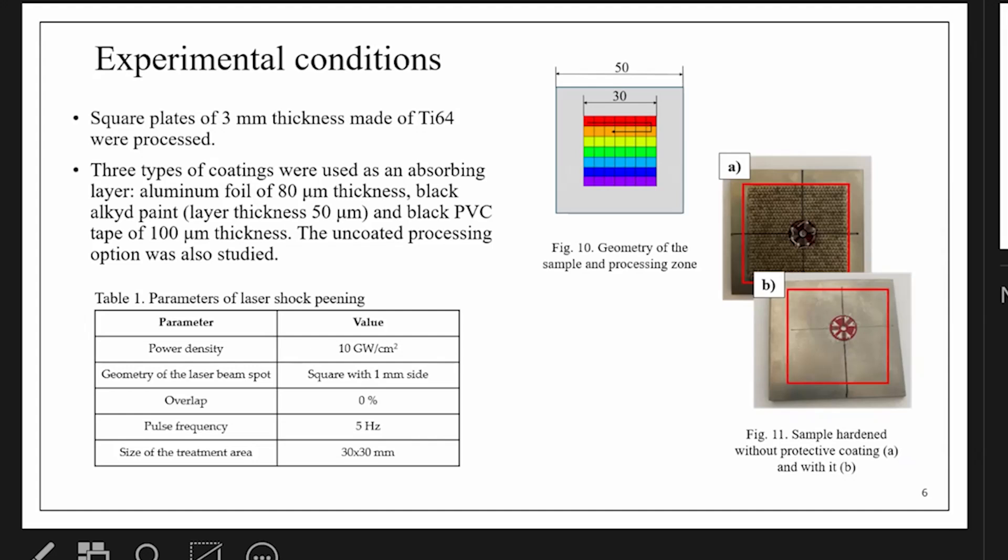The sample was treated on just one side. And the materials which were used for protective coating were aluminum foil, black tape, and black paint.